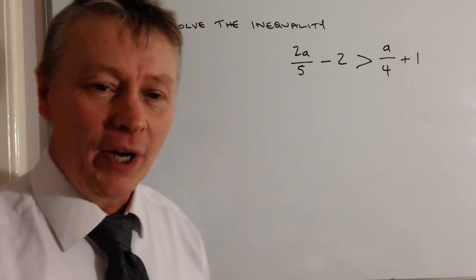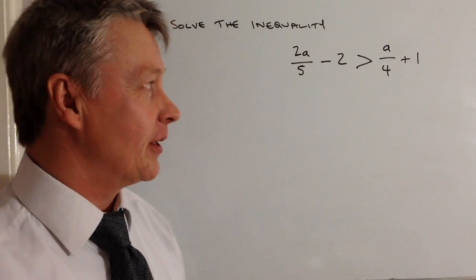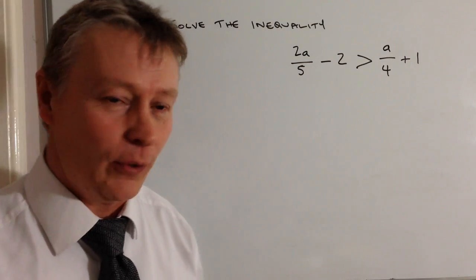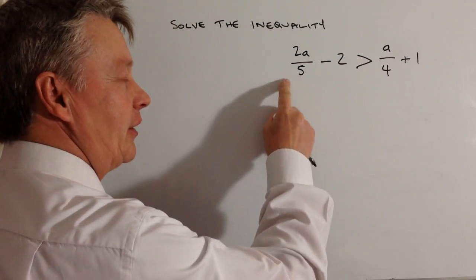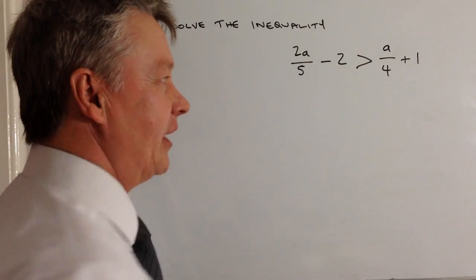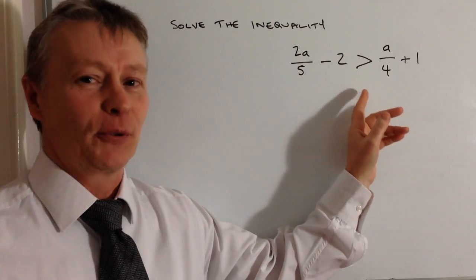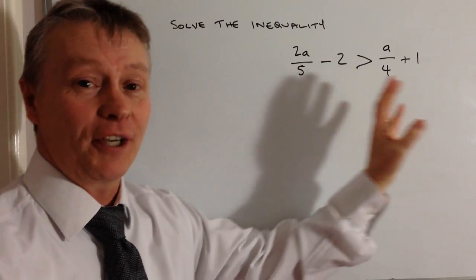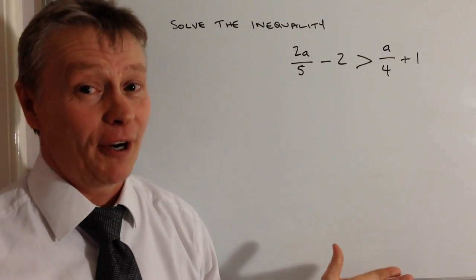The way we treat these types of questions is to imagine it's a linear equation. You've got a fraction here and a fraction here, so whatever we do to the left side, provided we do it to the right, we're okay.